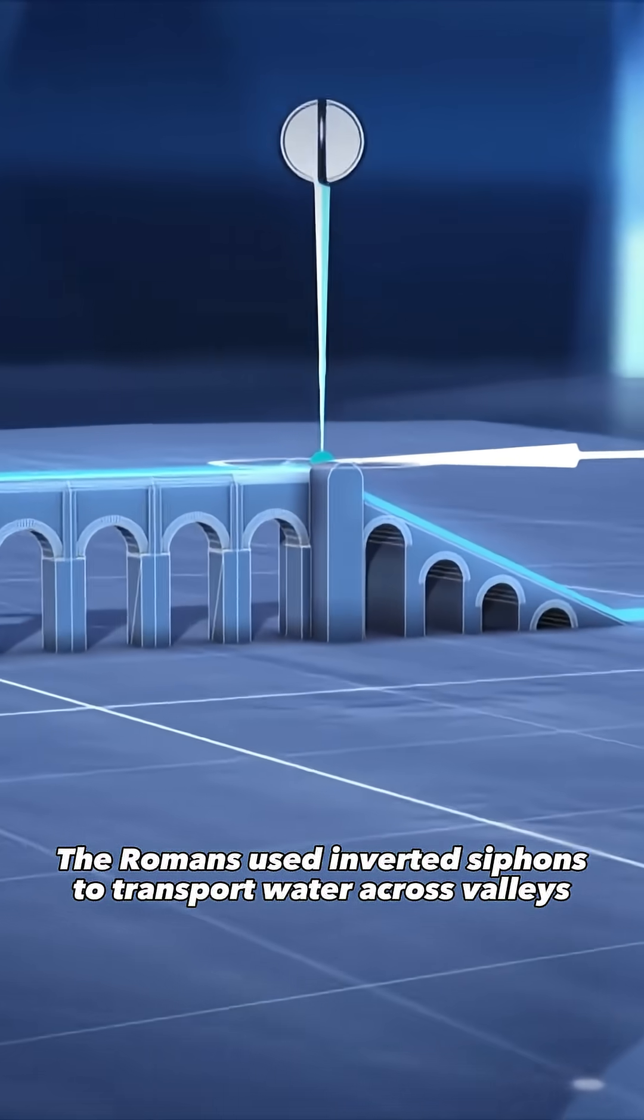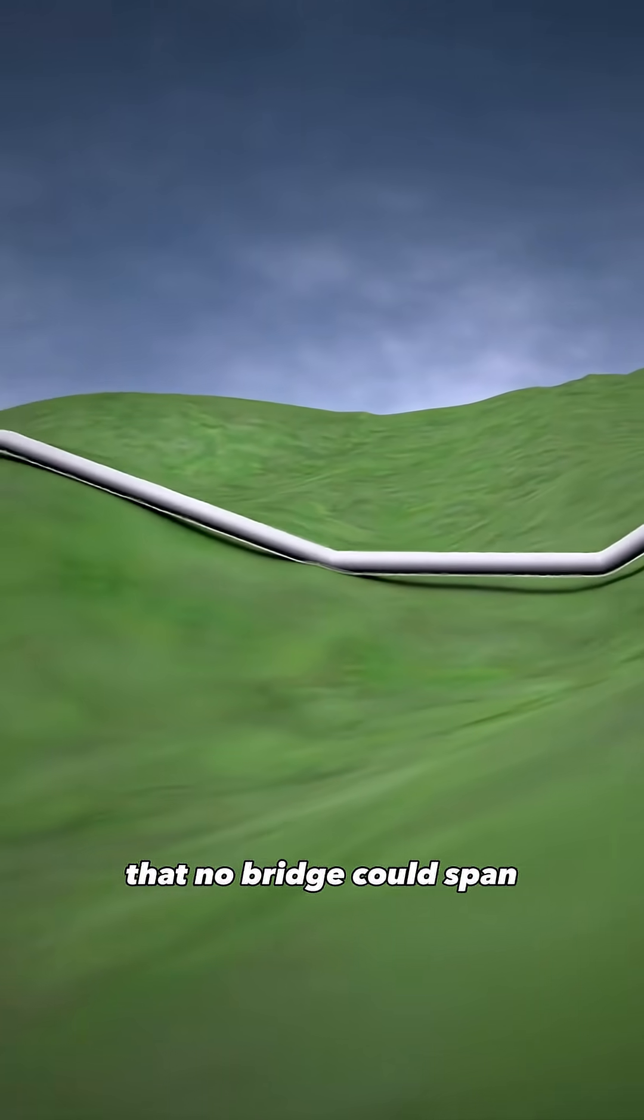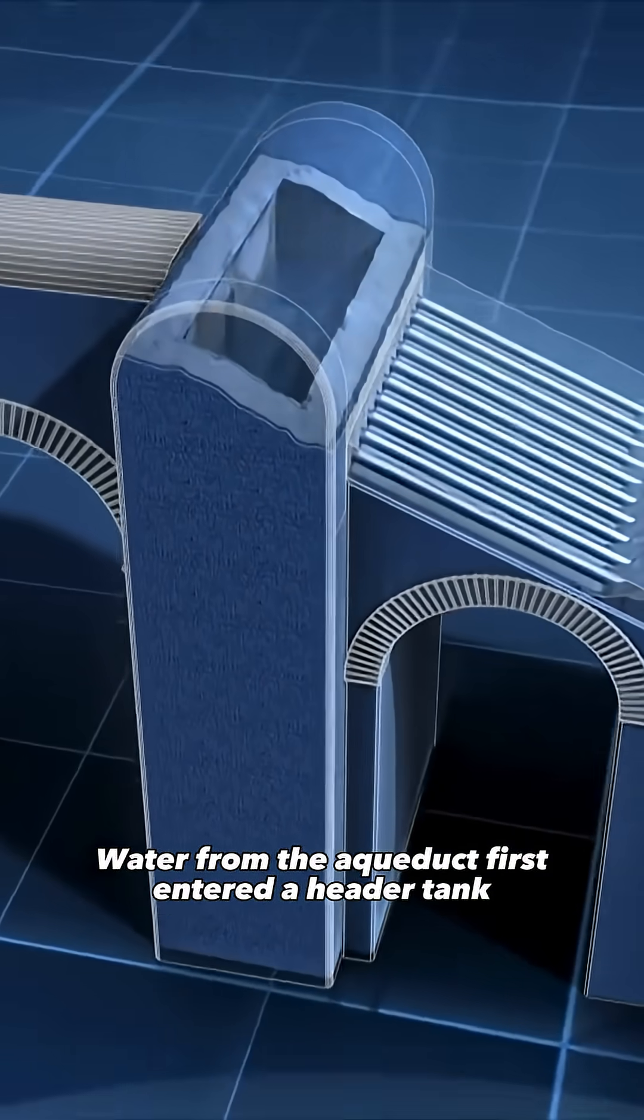The Romans used inverted siphons to transport water across valleys that no bridge could span. Water from the aqueduct first entered a header tank,